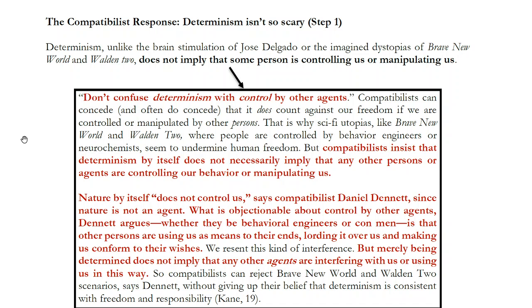The compatibilist will say that's not actually the case. Cain's first point is: don't confuse determinism with control by other agents. Compatibilists can concede that it does count against our freedom if we are controlled or manipulated by other persons. If you were being manipulated in an experiment by Jose Delgado or some mad scientist who hooked a machine up to your brain, then you wouldn't be free. Likewise, people controlled by behavioral engineers or drugs — as in Brave New World or Walden 2 — don't seem to be free either. But notice what makes those cases different: in those cases there is an actual person, some individual or group, intentionally trying to control your actions.